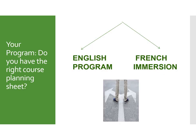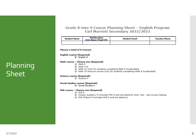Please make sure your course planning sheet is the appropriate one — are you in the English program or the French program? You need to fill in the top with your name, your MyEd number, your pupil number, your student email, and your homeroom if you know it. You'll notice that English 9, because it's required, has already been checked off for you — everybody here is going to be getting English 9.